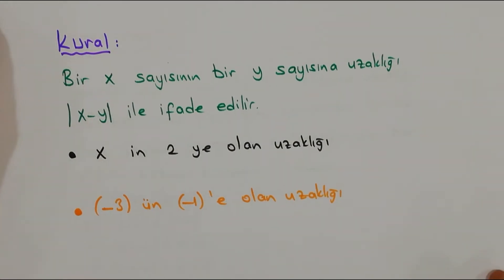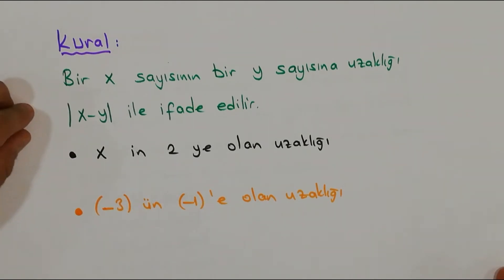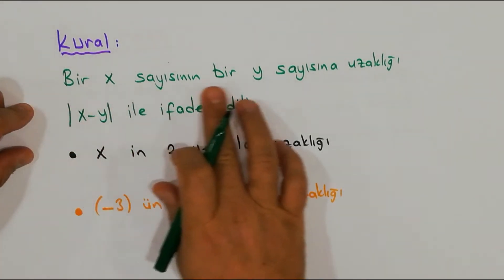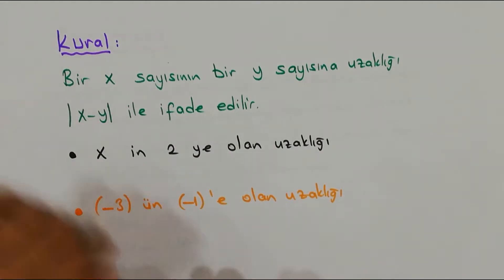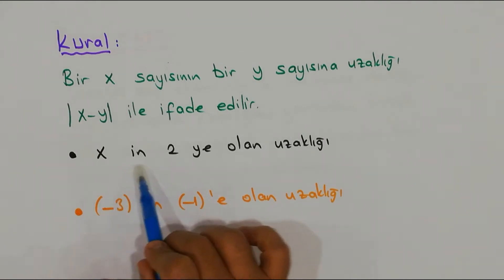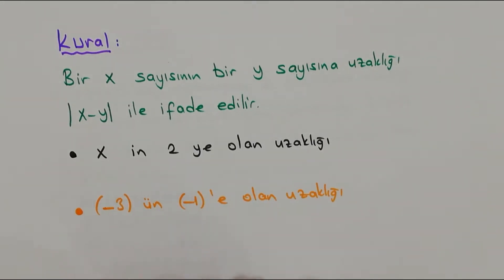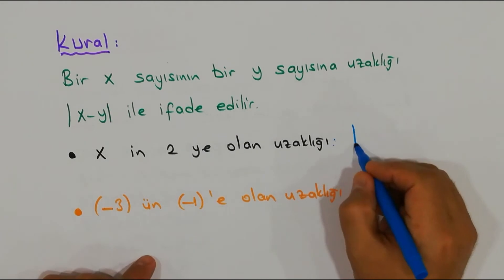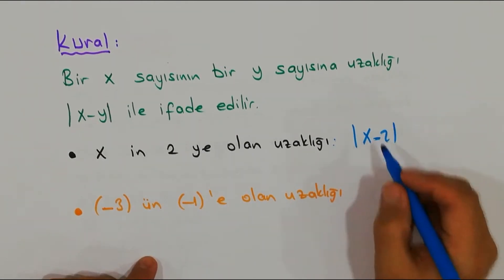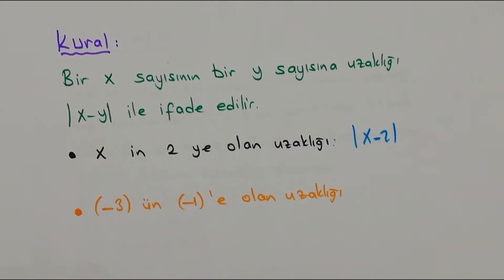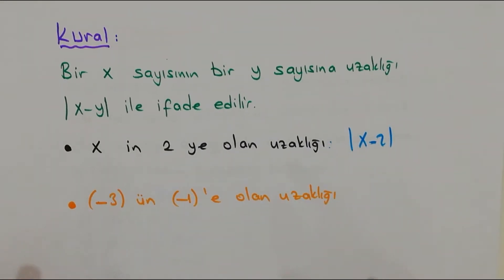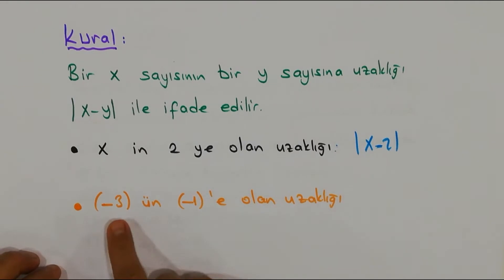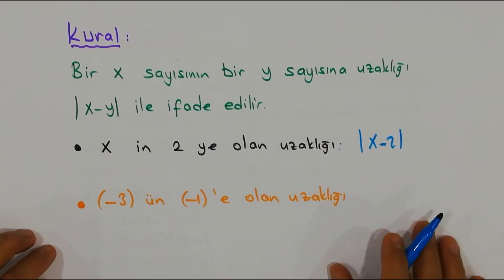Şimdi bir tane kuralımız daha var güzel insanlar. Bir x sayısının bir y sayısına olan uzaklığını biz |x - y| ile ifade ediyoruz. Örnek verdim: X'in 2'ye olan uzaklığı nasıl bulunur arkadaşlar? Mutlak değer x eksi 2, bu kadar basit. Peki ben 2'nin x'e olan uzaklığı deseydim ne olurdu? 2 eksi x olurdu, bu kadar basit arkadaşlar.